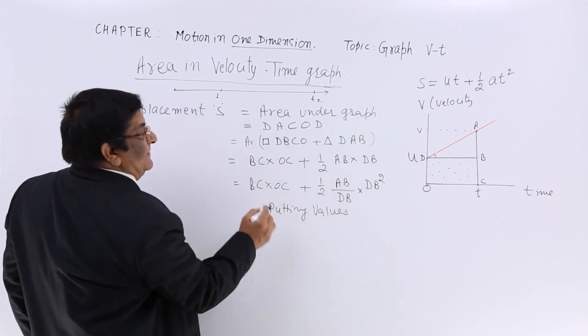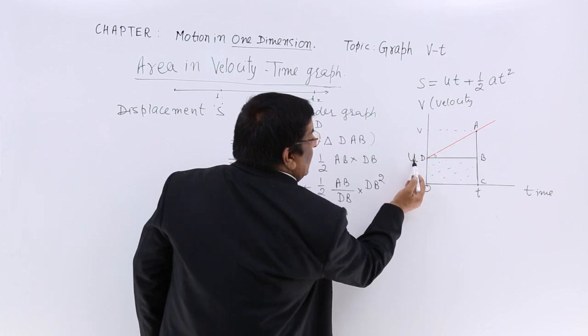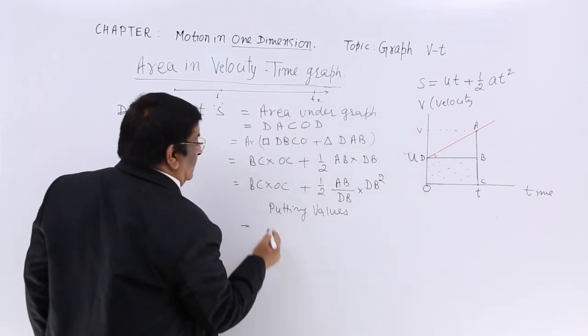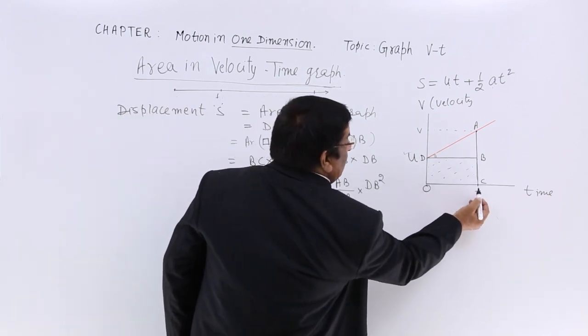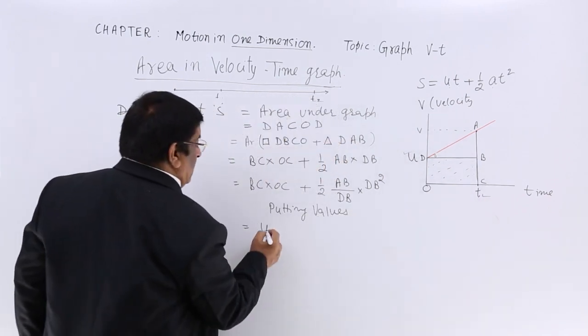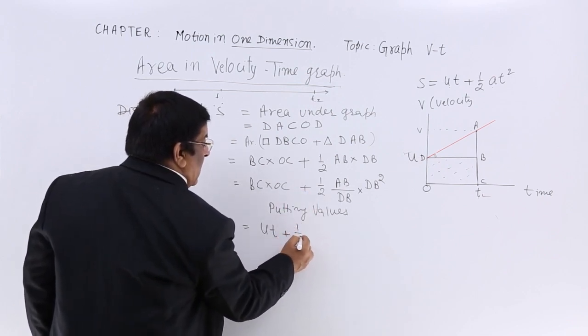BC - this height, this height represents what? Initial velocity, u. OC is what? Time. u times t. Plus half.